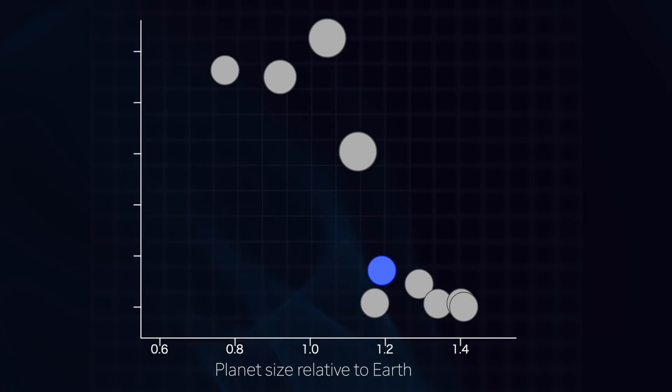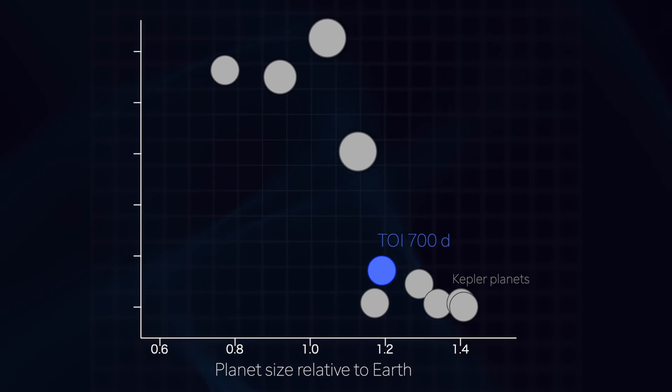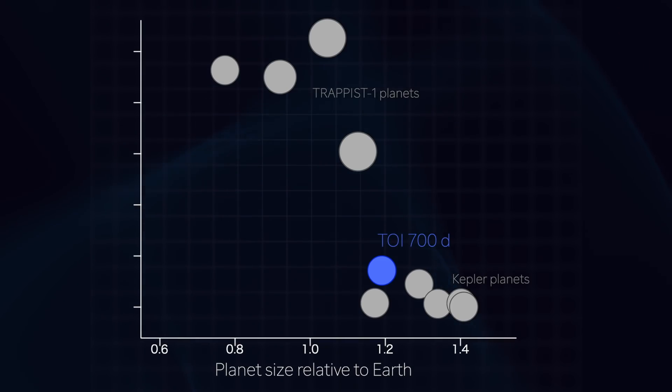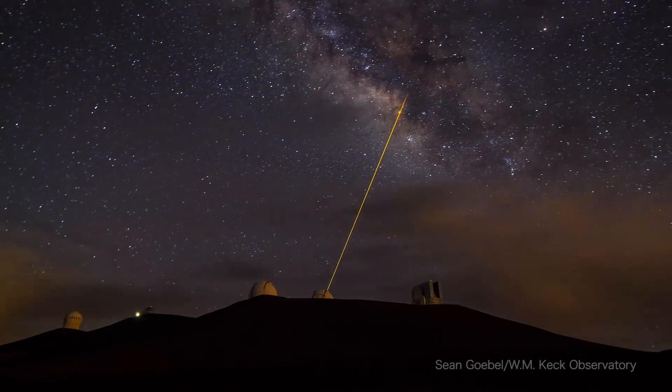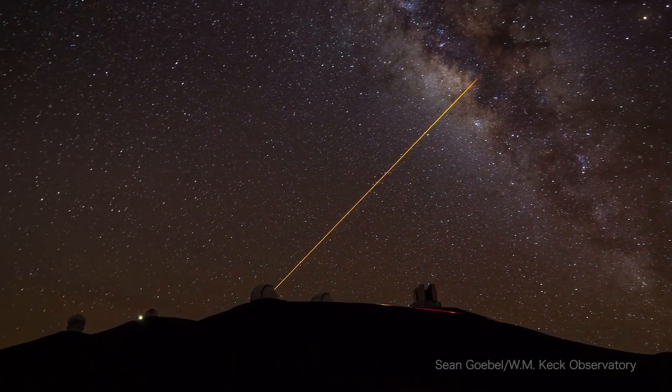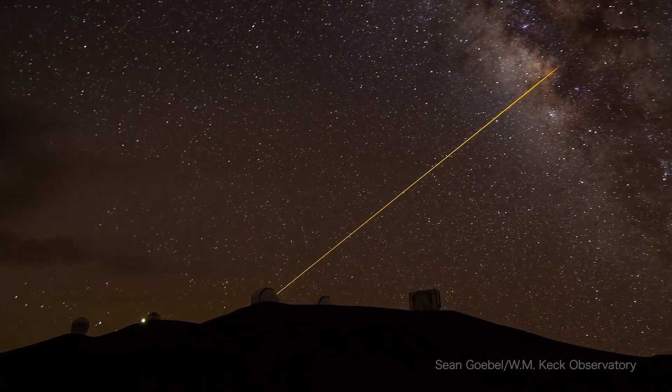TOI 700d is one of only a few Earth-sized planets found in potential habitable zones. Others include discoveries by Kepler and several planets in the TRAPPIST-1 system. Because TOI 700d is bright and nearby, the planets are good candidates for precise mass measurements by ground-based telescopes.